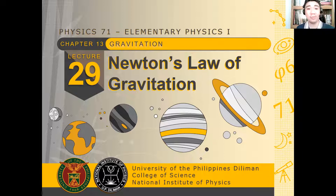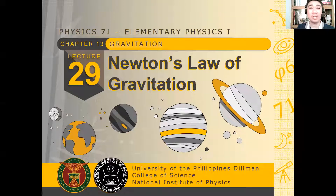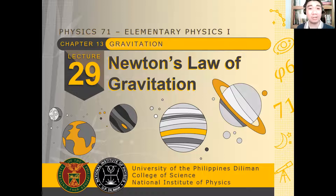We're done with Newton's universal law of gravitation. Now, if you noticed the equation of motion earlier, it's 1 over r squared. The equation of motion we know is only for constant force. Now, what if the force that we consider is proportional to the displacement? Like for example, a spring.